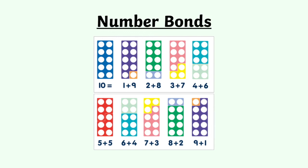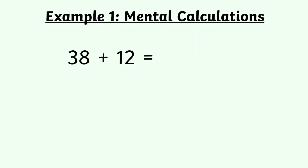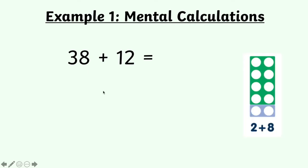Let's have a look at our first example. We're going to be thinking a lot today about mental calculations, which means being able to do a calculation in your head without having to write anything down. So let's have a look at this calculation: 38 add 12. Straight away we might be thinking both of these are two-digit numbers — maybe I need to do the column addition method, or draw a bar model. But actually, if we use what we know from our number bonds, this becomes a lot more straightforward, because we can use the 2 add 8 equals 10 number bond.